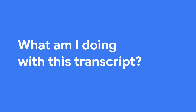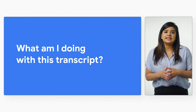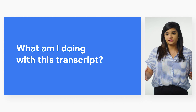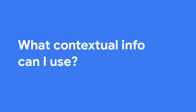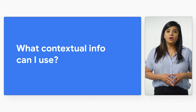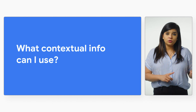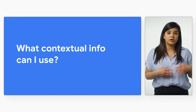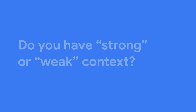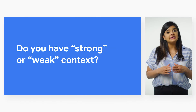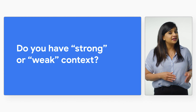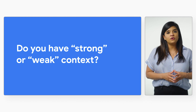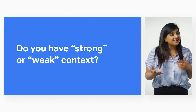There are a few things to consider. First, what am I doing with this transcript? Is there a downstream system that will be sensitive to particular words or phrases? Those words should get a bias towards them. Are there rare or proper nouns? These should also get a bias boost. What contextual info can you use — do you know what words someone might say or what they said in the past? These can be biased towards to help increase accuracy even on commonly occurring words, if you are sure they will be present. Do you have strong or weak context? You can bias heavily with strong context if you are sure the user is about to mention specific words, and bias less with weak context, meaning you know words will occur but not exactly when or where.